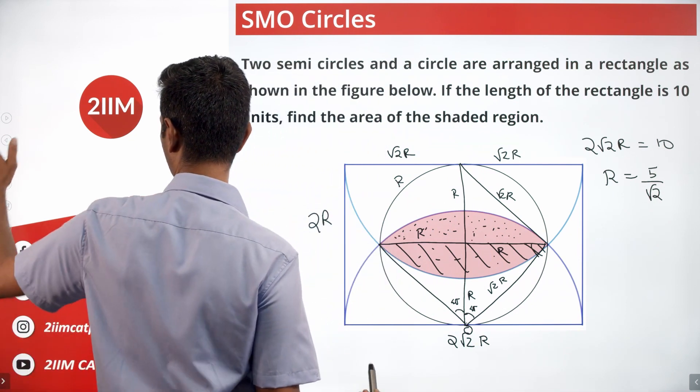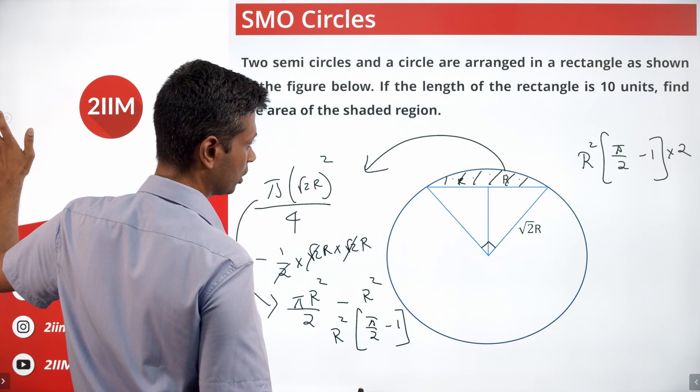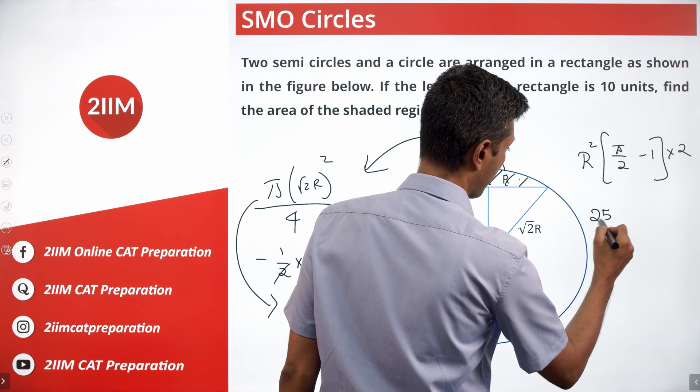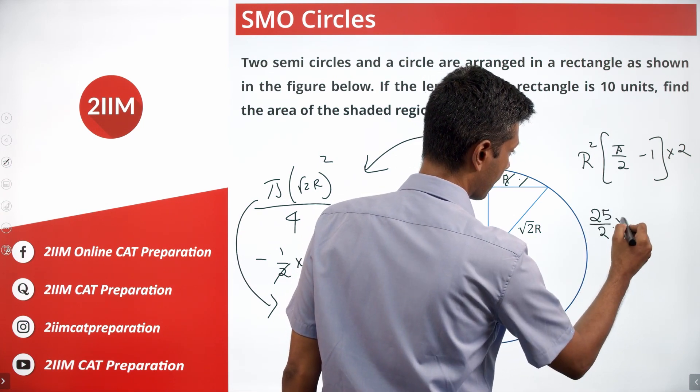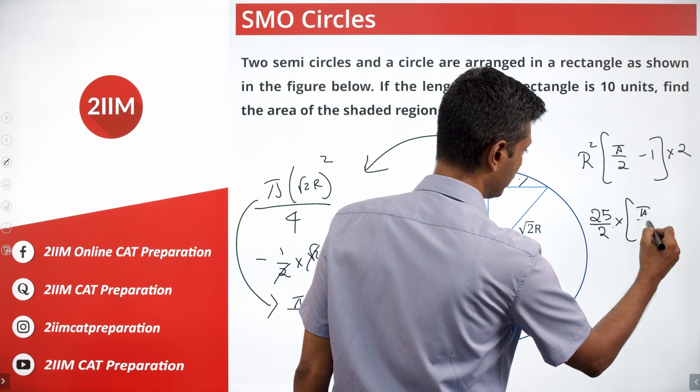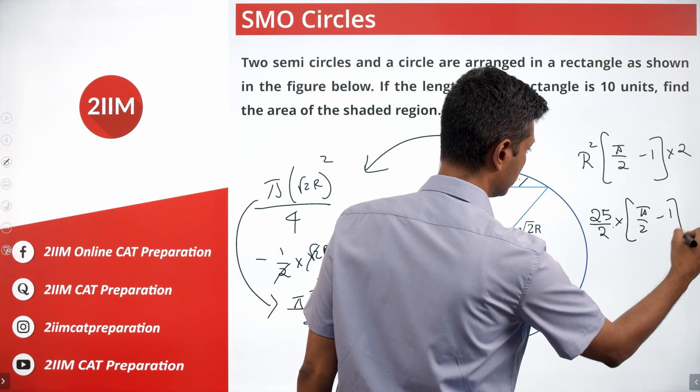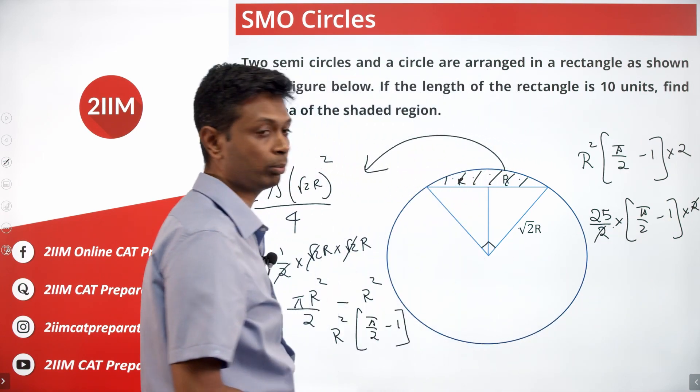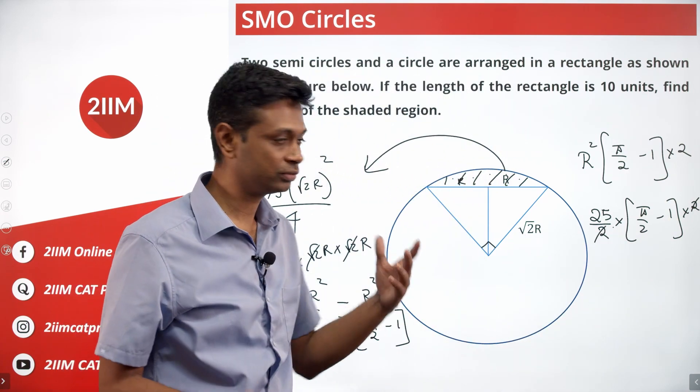Plug R equals 5 by root 2 into this expression that we have got. 25 by 2 into pi by 2 minus 1 whole thing into 2, or 25 into pi by 2 minus 1. That is the area of the shaded region.